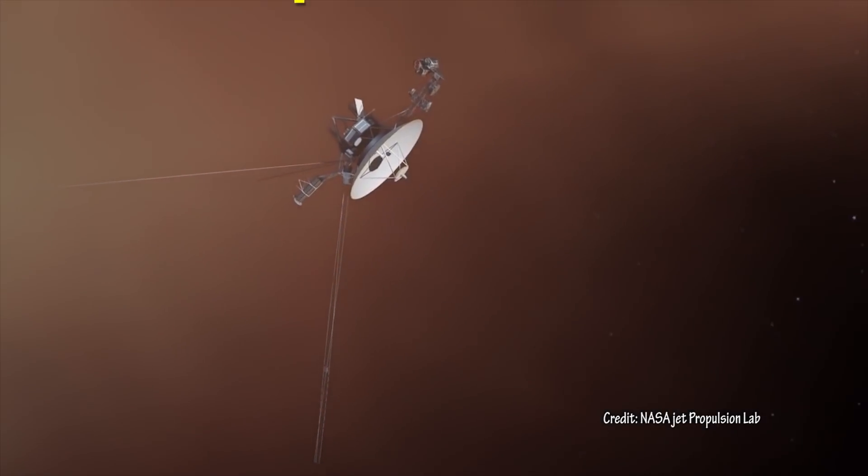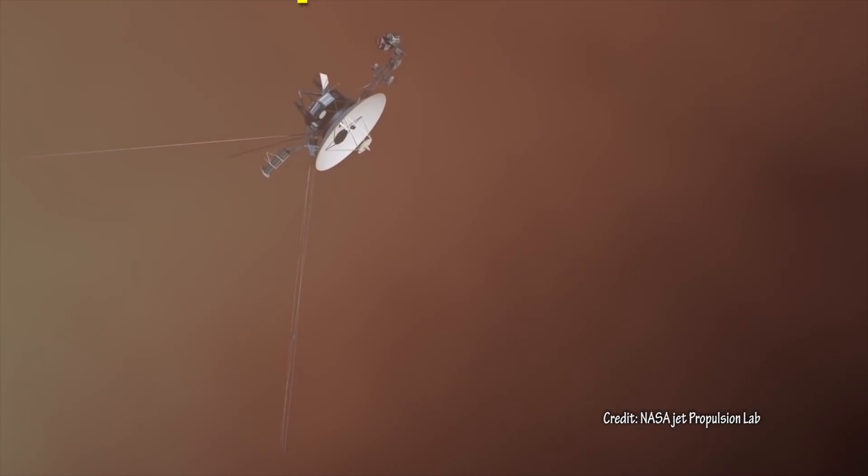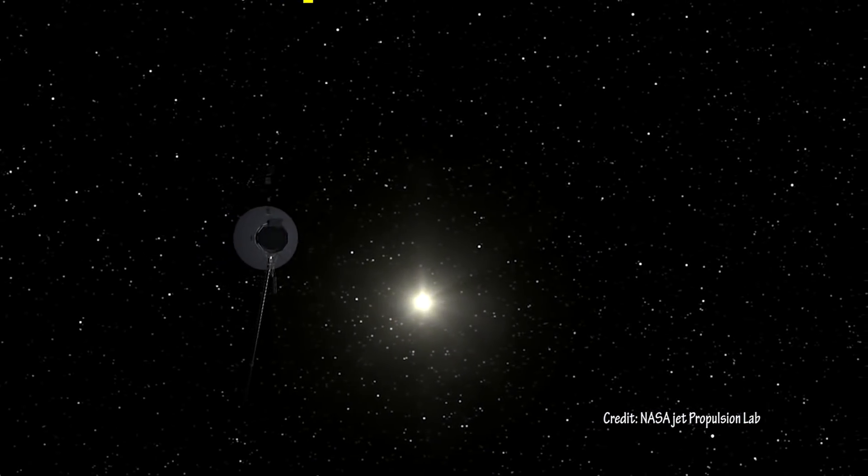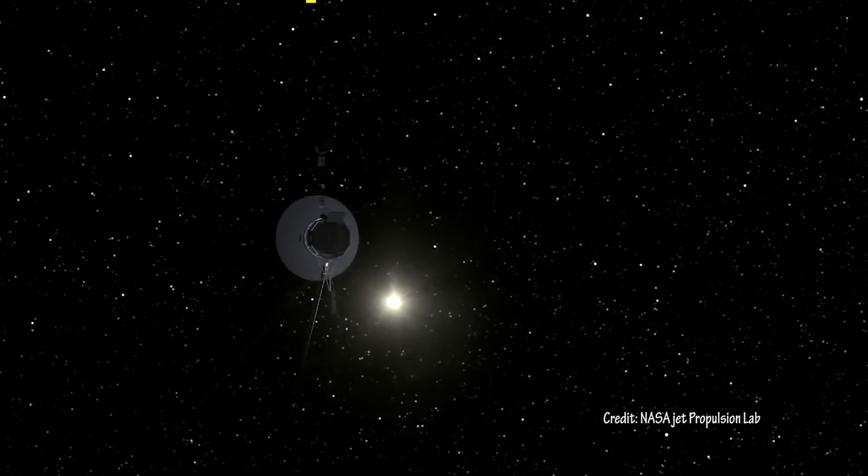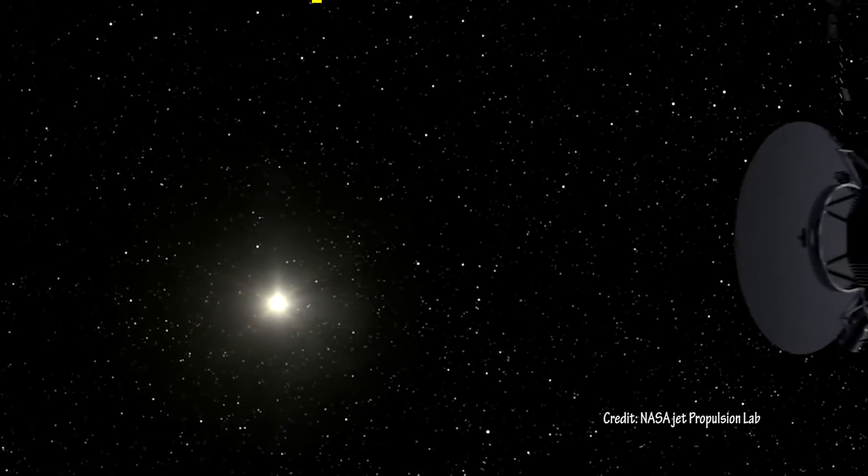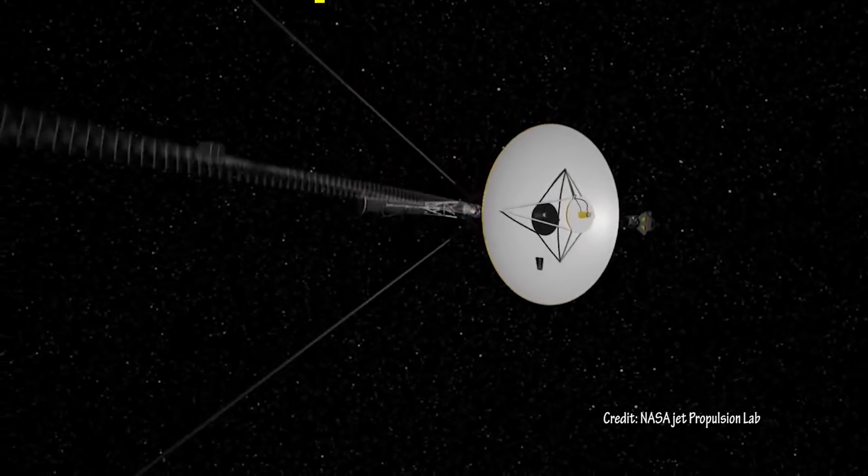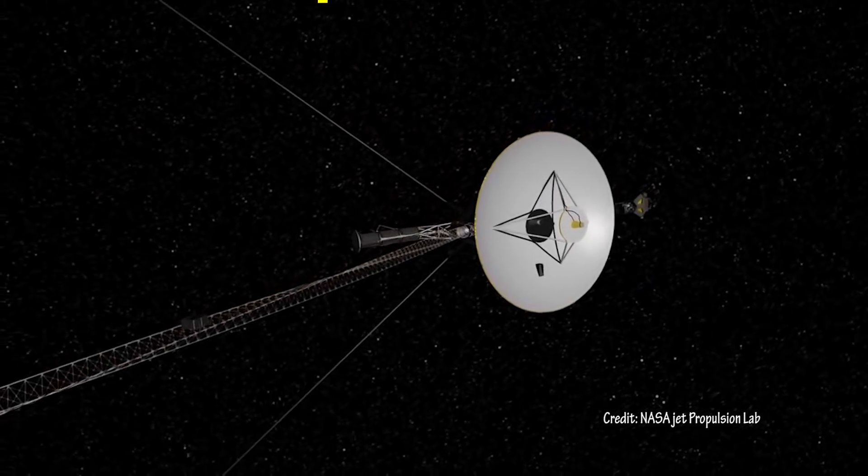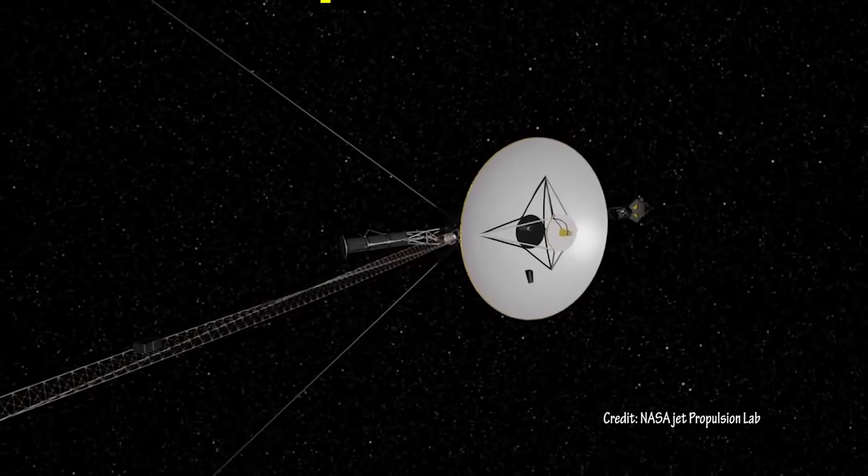NASA's Voyager 1 spacecraft, the first spacecraft to ever leave our solar system, is currently traveling away from the sun at a rate of 17 kilometers per second. If the Voyager were to travel to Proxima Centauri, at this speed it would take over 73,000 years to arrive.